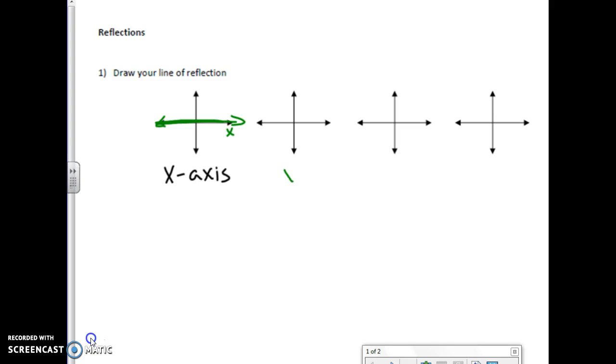The other one that I might reflect over is the y-axis, which is the vertical axis. Now I can also reflect over two specific lines, like x equals something, and y equals something.